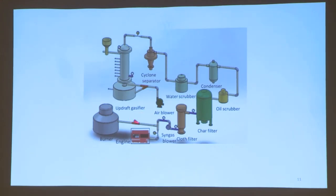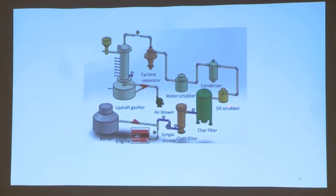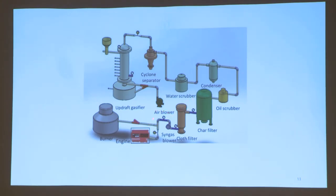This slide shows the detailed composition of our gasification and power generation system. The syngas goes through several secondary purification systems, including a cyclone separator, water scrubber, condenser, oil scrubber, and filter. Before the syngas becomes qualified, the gas is transferred into a burner for burning. After the lower heating value of the syngas reaches around 4 MJ per cubic meter, the syngas switches into the engine for power generation.